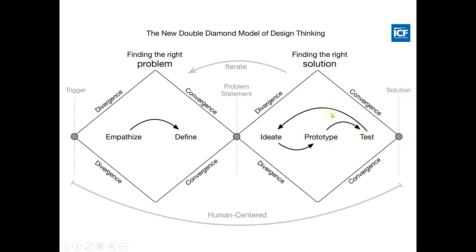If we are not able to find a solution even after a number of iterations, we go back to the previous stage and repeat the processes — that is, empathizing and again defining the requirements correctly. If we are not able to find a solution, it means we have not defined the problem correctly, so we need to define it first and then move to the next stage. This model is known as the double diamond model of design thinking, and it shows in detail the convergence and divergence occurring during the different phases of the design thinking process.